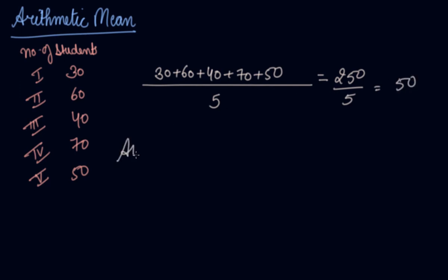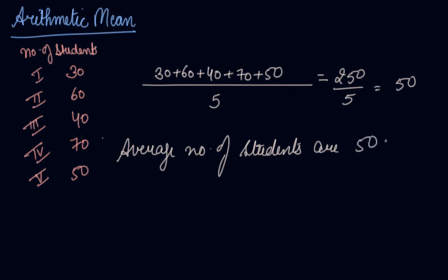So the average number of students is 50. In this way, we can say that arithmetic mean is the number which is obtained by adding the values of all the items of the series and dividing the total by the number of items.